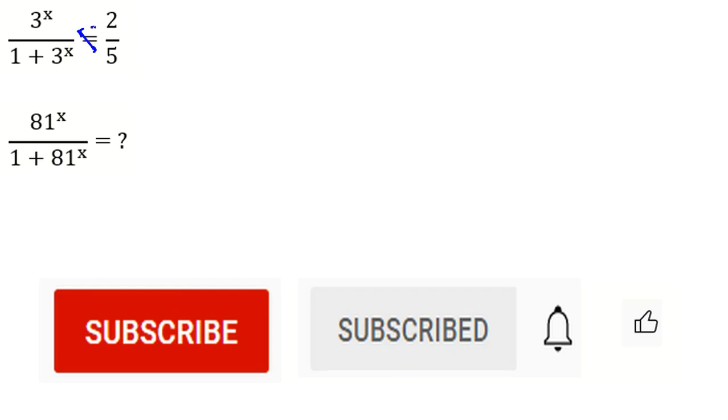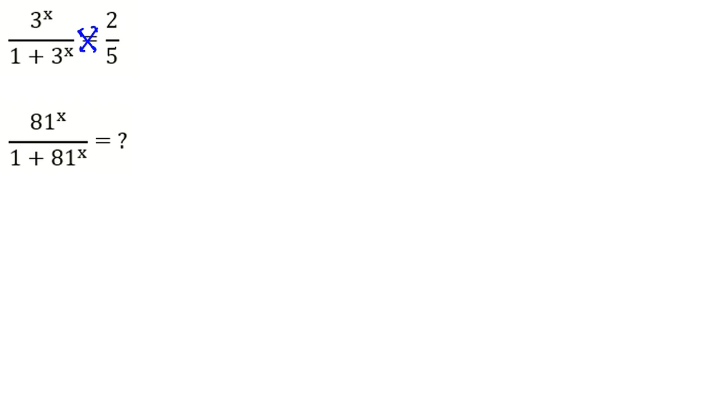Let's solve it together. We cross multiply and here we can say 5 times. Let me call 3 to the x equal to a. So it will be 5a, or let me write before crossing multiply.